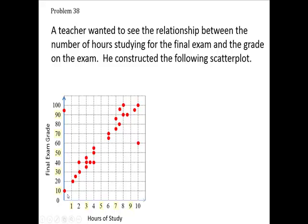What are all these dots? One student studied zero hours and made a 10. Another student did not study at all and made a 90. A student scored a 20 — he only studied a little bit more than an hour. Another one studied two hours and made a 40. It's called a scatterplot.